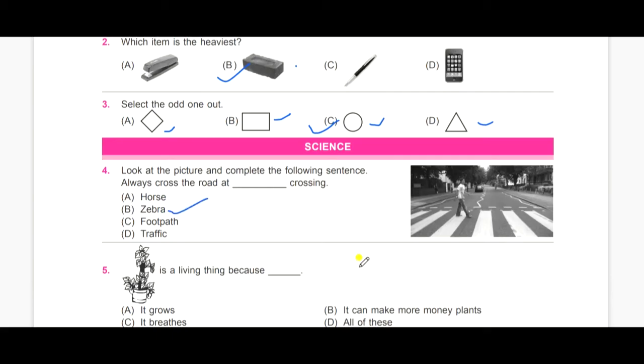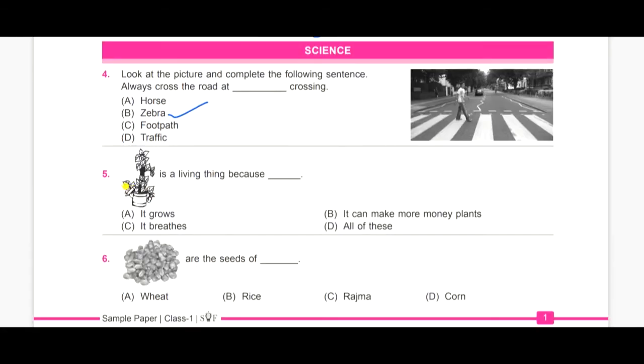Now, the fifth question is. Dash is the living thing because. So, the picture is a plant. Now, we need to list if it is a living thing. Why? Why is it a living thing? So, A, it grows, B, it can make more money plants, C, it breathes and D, all of this.